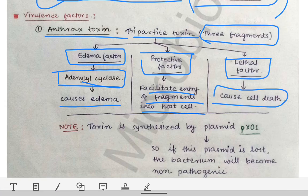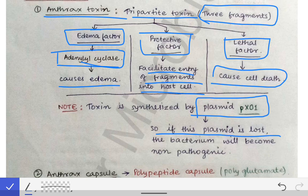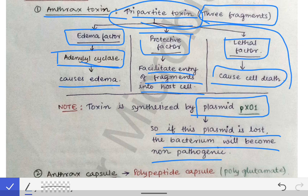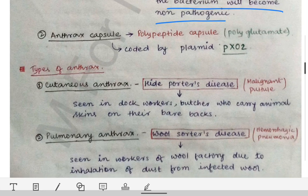This tripartite toxin is synthesized by plasmid pX01. If this plasmid is lost, the bacterium will become non-pathogenic, because all the pathogenic features of this bacteria are due to this tripartite toxin coded by plasmid pX01. Once this plasmid is lost, the bacteria will become non-harmful to anyone.